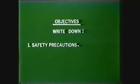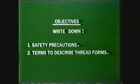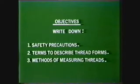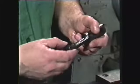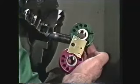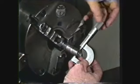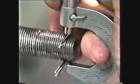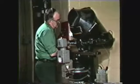After viewing this videotape, you should be able to write down the safety precautions to observe in the machine shop, define the basic terms used to describe thread forms, and describe five methods of measuring threads: by using mating parts, the thread plug gauge or thread ring gauge, the thread micrometer, the three-wire method, and the comparator.